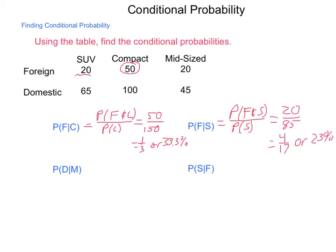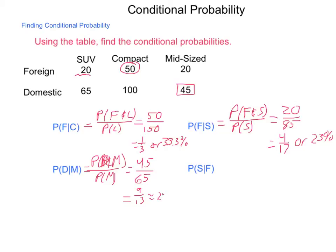Now, probability of D given M — probability of a domestic car given that we're only looking at mid-sized vehicles. This is P(D and M) / P(M). The probability of D and M — domestic mid-sized — is 45, divided by the probability of M, all mid-sized cars, which is 65. Both are divisible by 5, so simplified we get 9/13ths, which is around 24% — a little off doing mental computations.